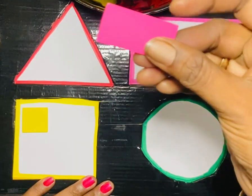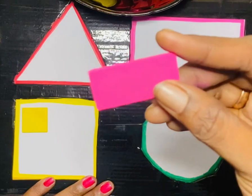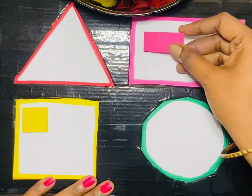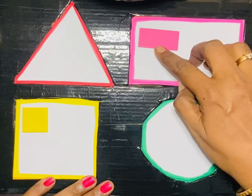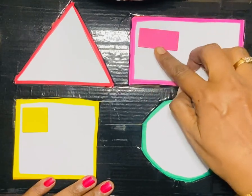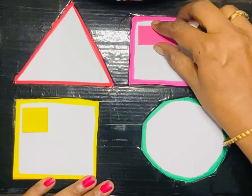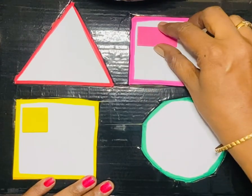Next one is Rectangle. It is pink color. Rectangle has 4 sides. Opposite sides are equal. See, this side and this side are equal, and this side and this side are equal. And it has 4 corners.